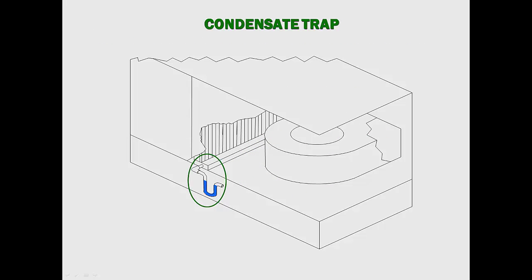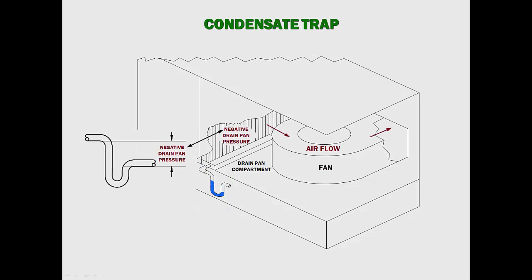In the industry, the most commonly used drain seal is the condensate trap, installed on the drain connection as illustrated. It uses water to form the drain seal. In theory, the design and operation is simple. The geometry of the trap is determined by the negative pressure created in the drain pan compartment by the fan.